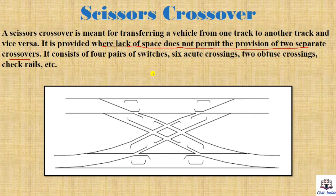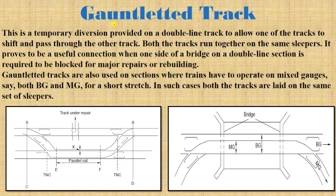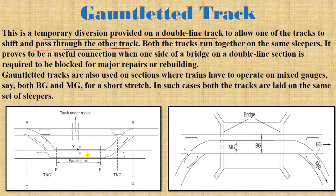Next is the gauntlet track. This is a temporary diversion provided on a double line track to allow one of the tracks to shift and pass through the other track. When one track of a double line is under repair, a gauntlet track is made to provide diversion so trains can continue operating.